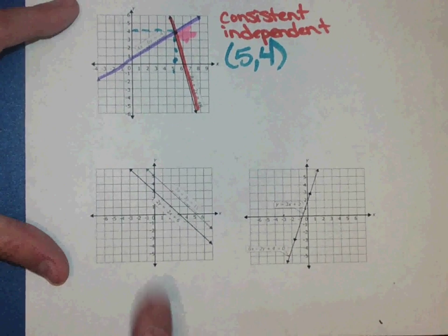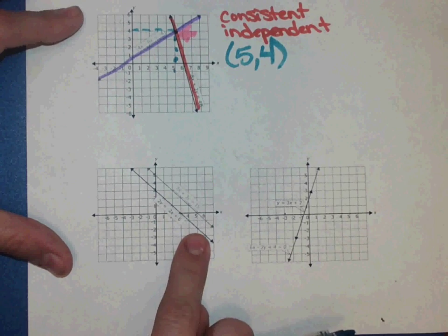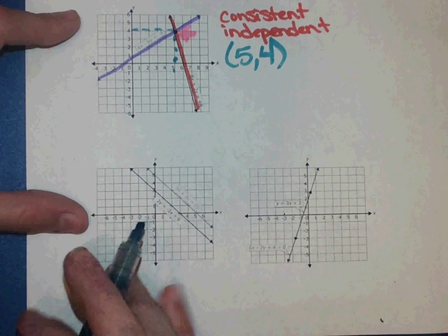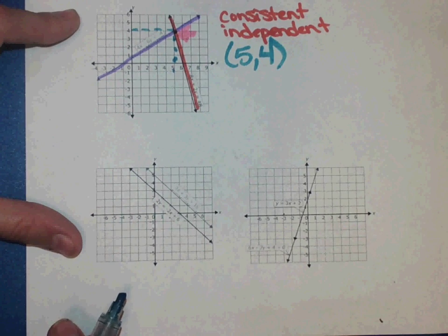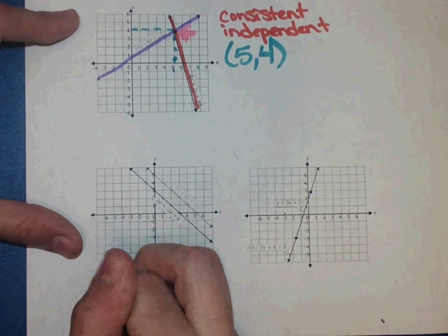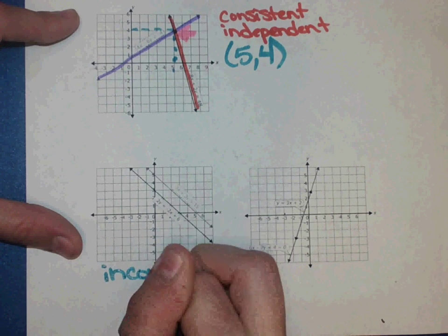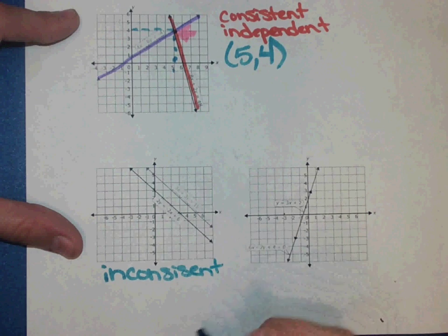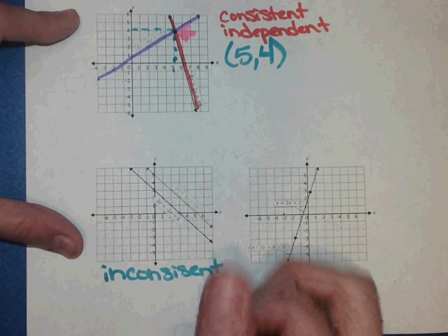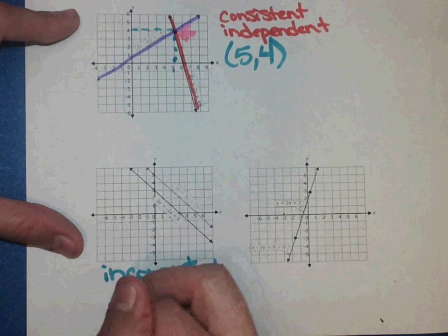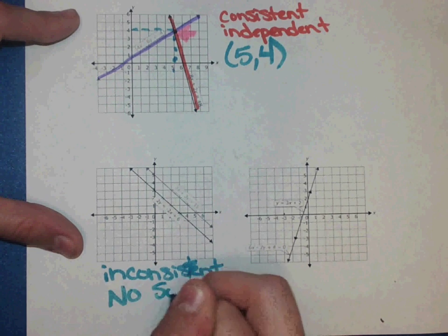Let's look at this one. Notice there are two parallel lines. They never, ever, ever cross. Well, remember, a solution is where they cross. So if they don't, they would be considered inconsistent and no solution.